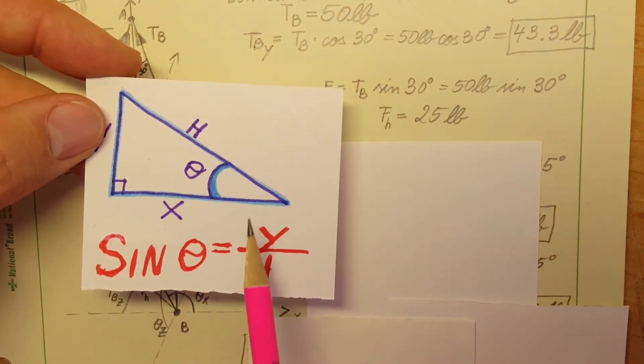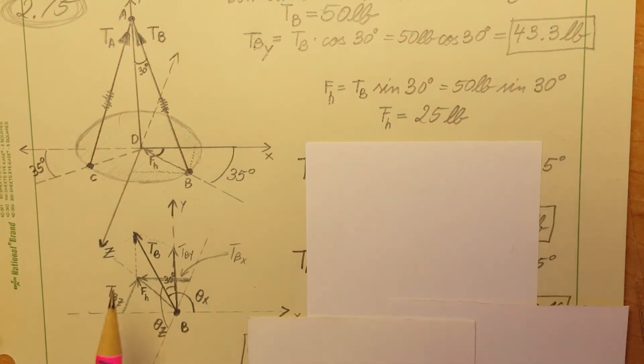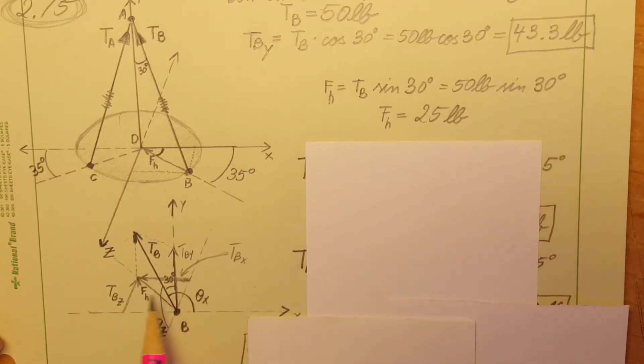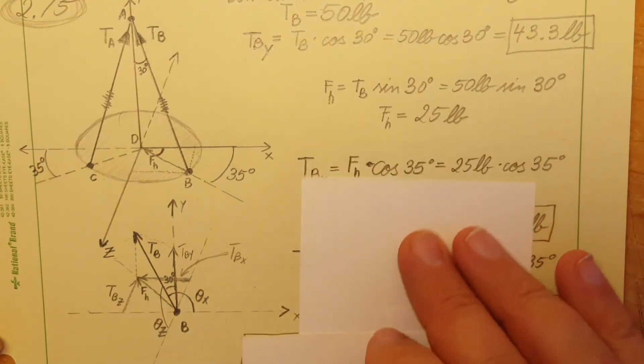This triangle we're going to use sine, the triangle with TB, the FH at the bottom, and the line between the tips of the two arrows. We can use sine 30 times TB and plugging in we get a value of 25 pounds. Now we can use this one to find our other components.